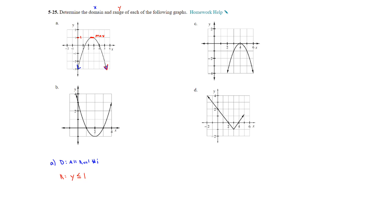On part b, it's a parabola opening up — very similar to part a. The domain is still all real numbers since it continues to open left and right. For the range, it doesn't have a max but has a minimum at negative 1 and continues to go up forever. So the y values are all values greater than or equal to negative 1.